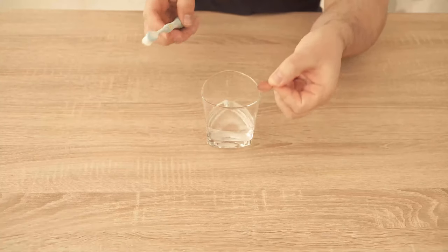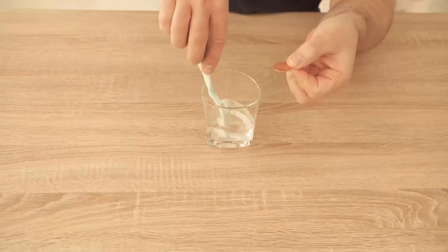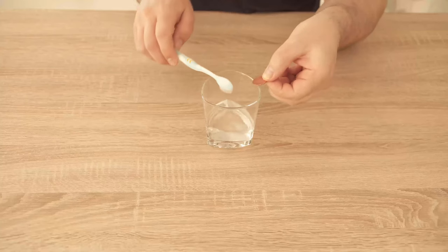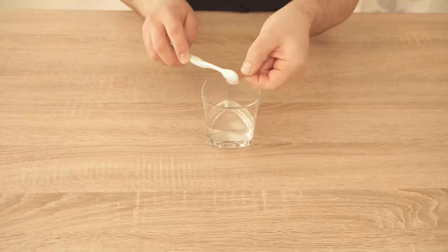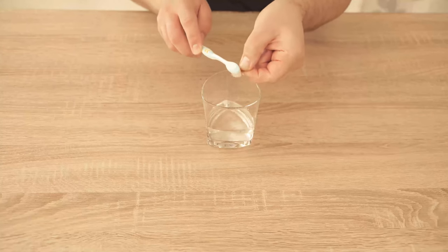And if there are more stubborn stains, for example on the bumps of the coins, you can also use a toothbrush. Just dip your toothbrush once into the vinegar salt solution and rub the dirt off with that.